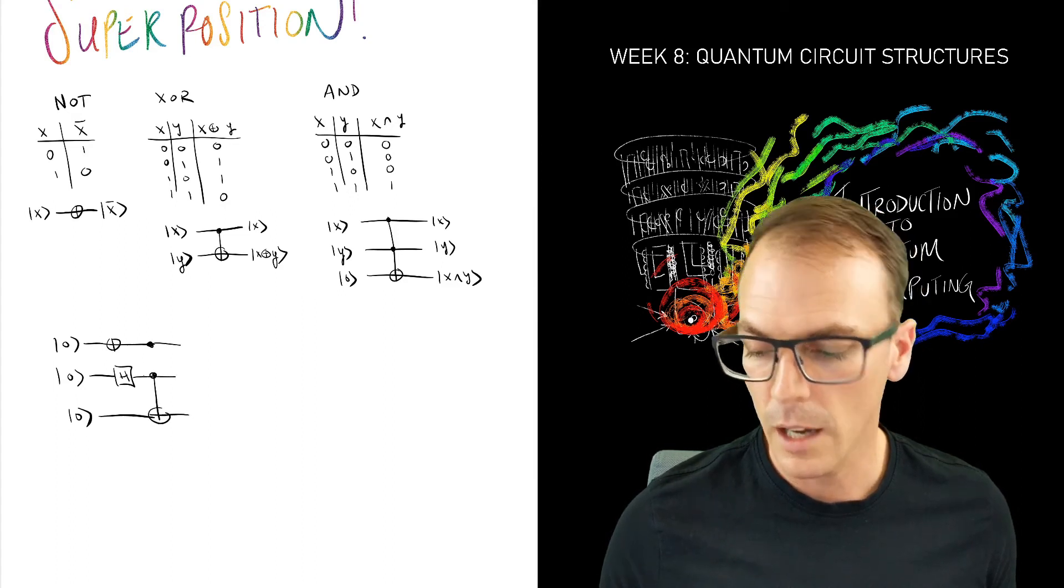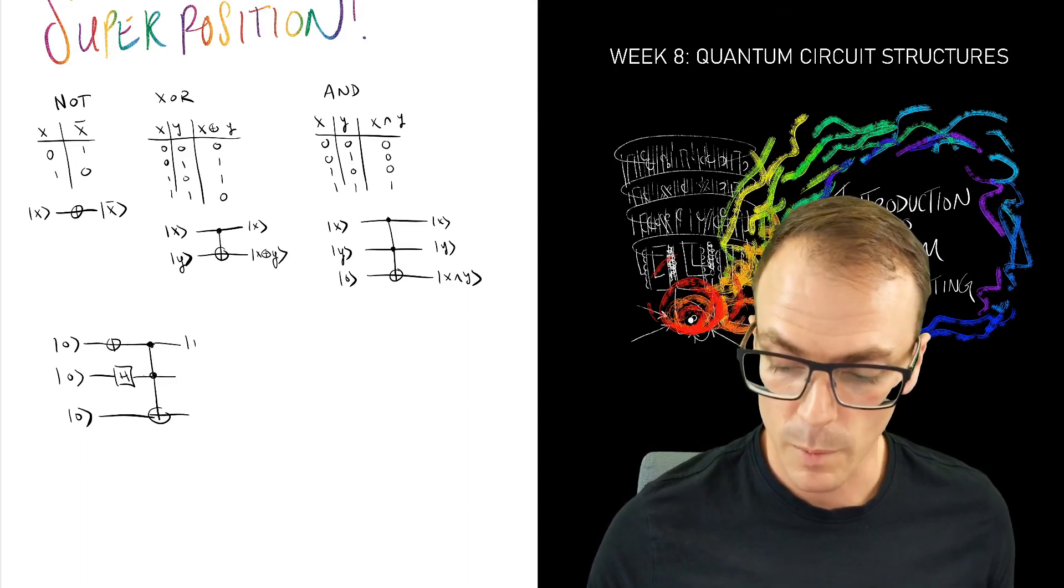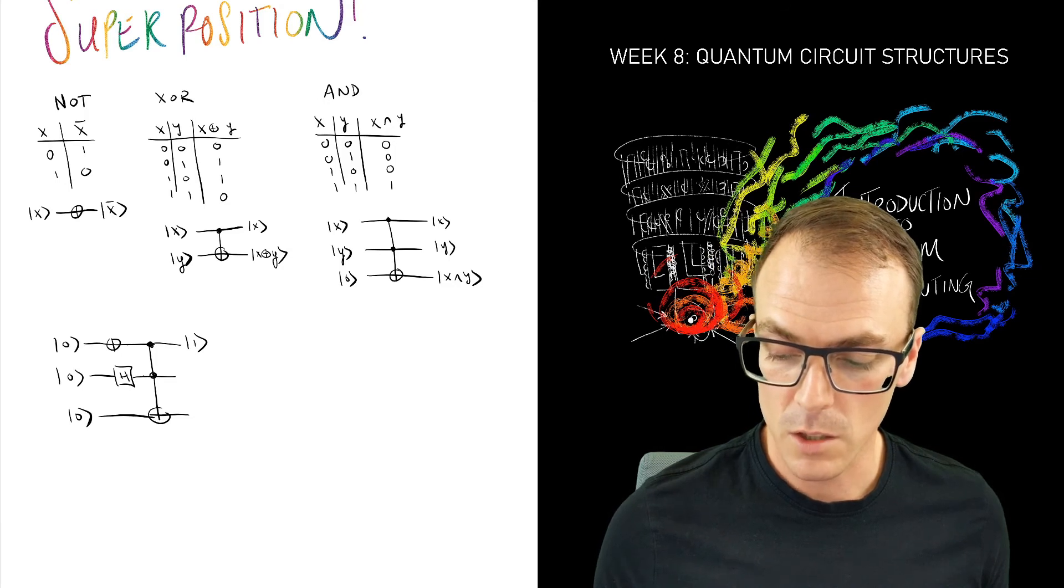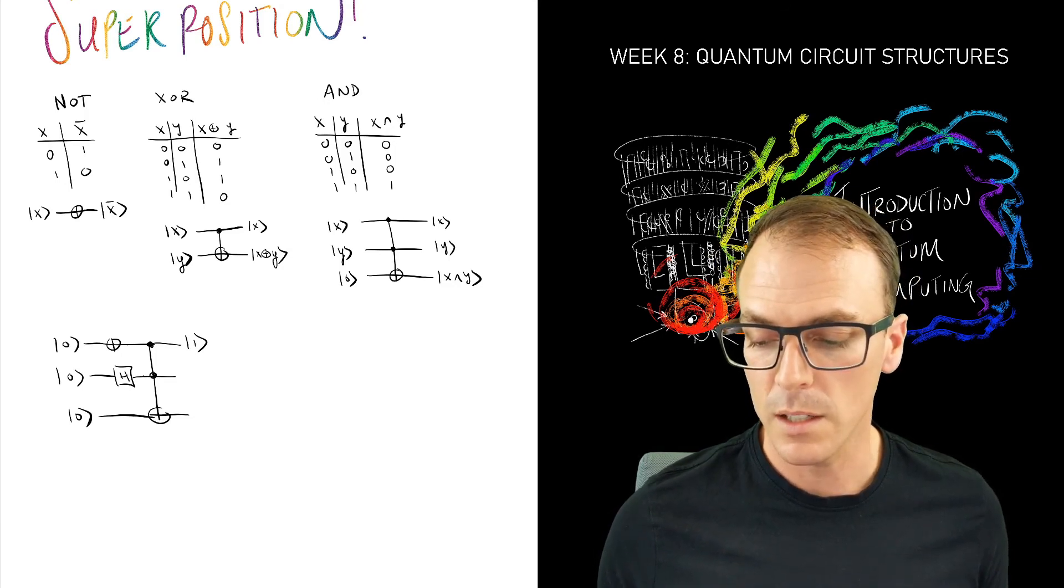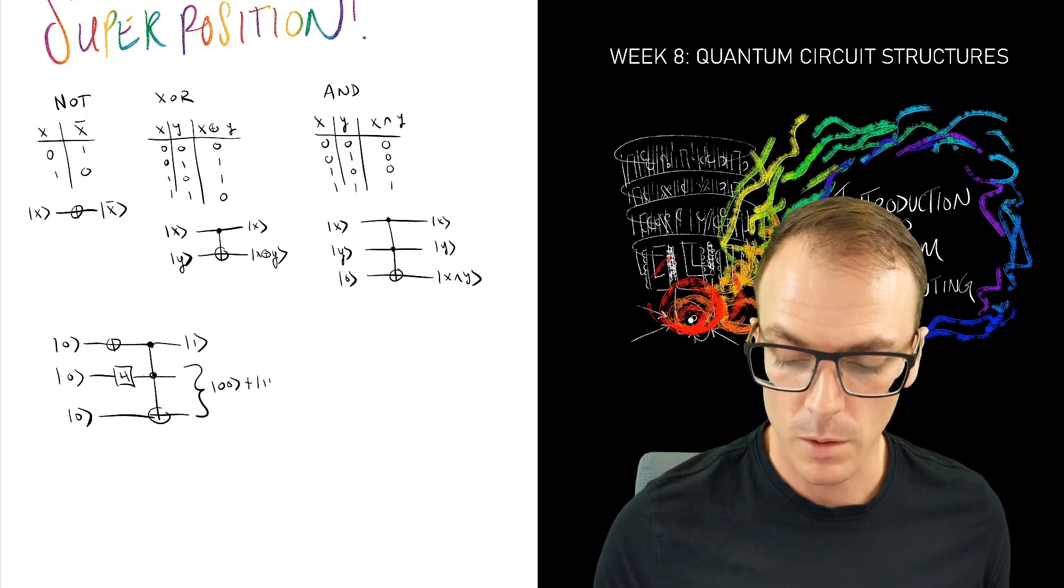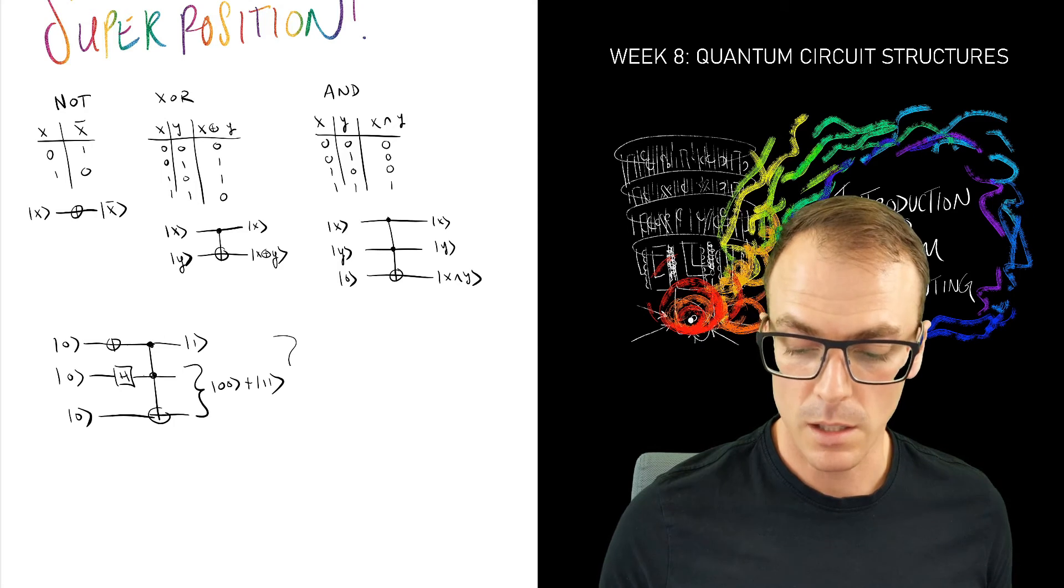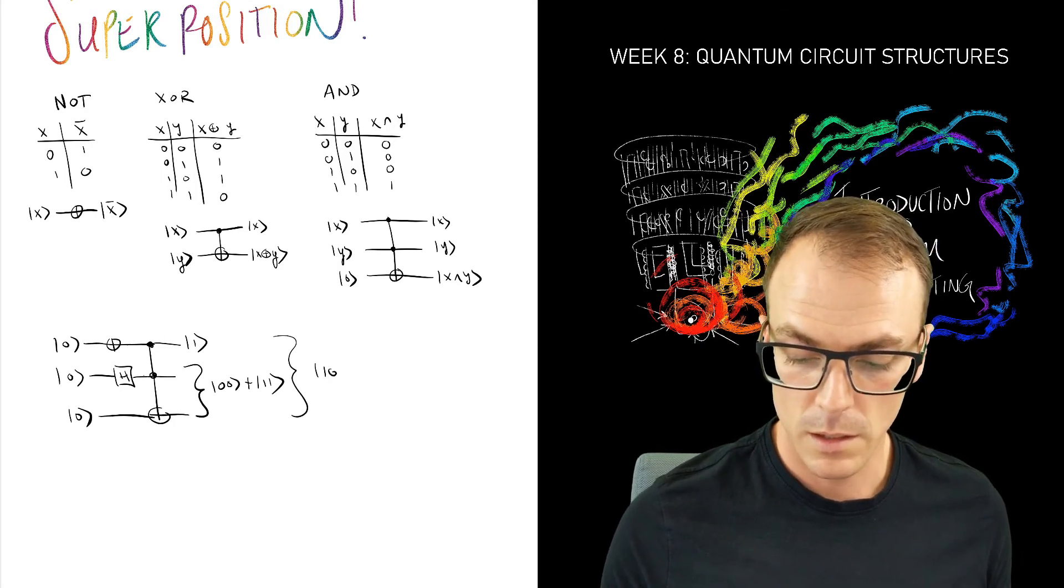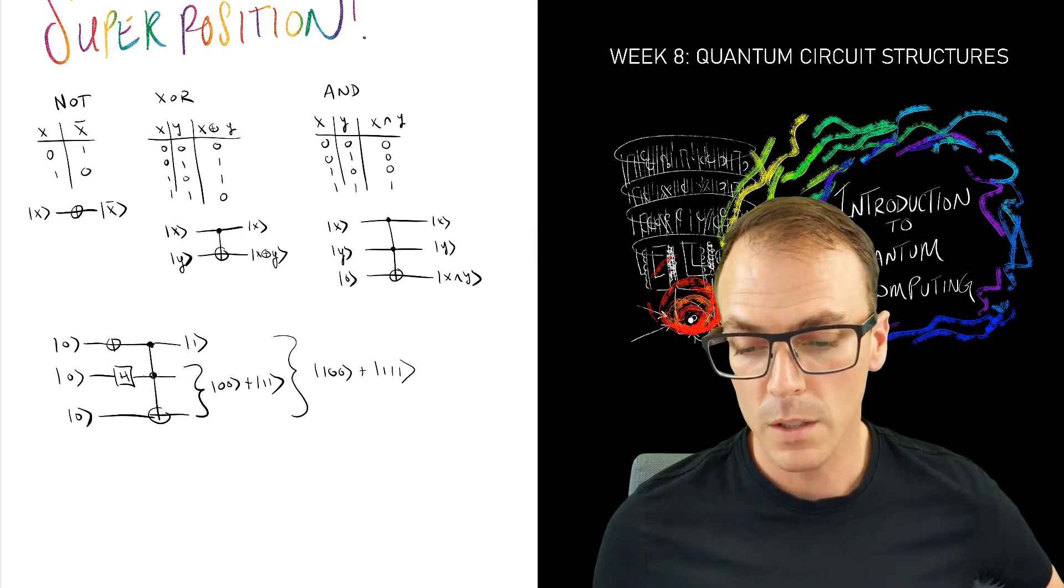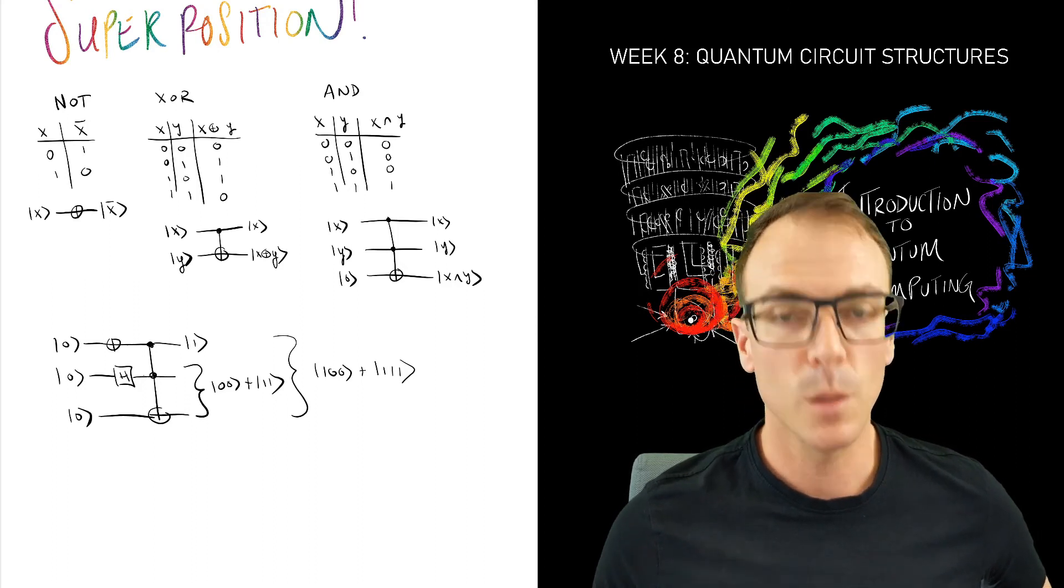is in the one state and so that remains in the one state, and then the second register is in a superposition. So this controlled-controlled-NOT—we've seen this Hadamard controlled-NOT before as one that produces an entangled state. Ignoring the one over root two for a moment, when we combine these two things together we get |1⟩|0⟩|0⟩ + |1⟩|1⟩|1⟩. So we've performed two rows of this AND truth table in superposition.